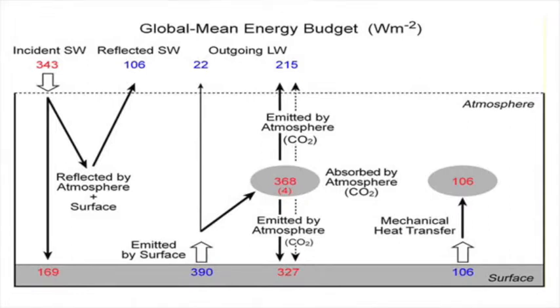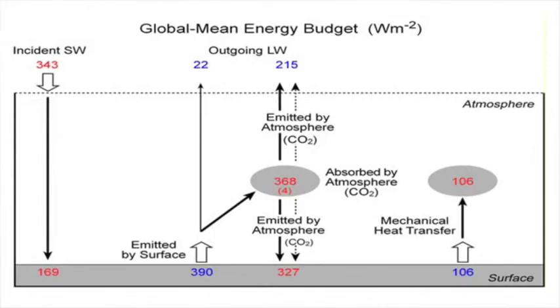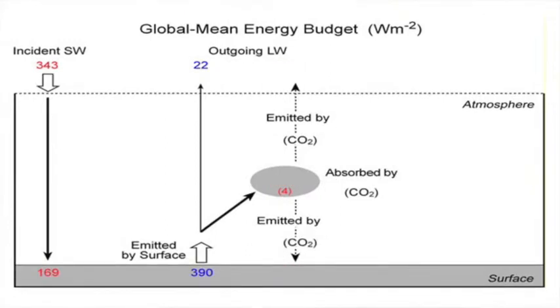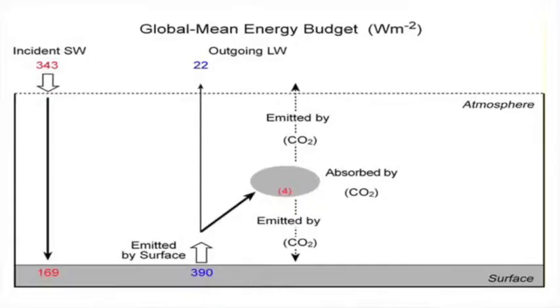Reflected shortwave energy, which depends on cloud and ice, can't change independently. Mechanical heat transfer from the Earth's surface, which depends on ocean circulation, can't change independently. And 99% of the longwave energy absorbed by the atmosphere and re-emitted back downward to warm the Earth's surface, which depends on water vapor and cloud, can't change independently. In the model world — the part consistent between all two dozen models — changes in the global energy budget reduce to a highly simplified balance driven exclusively by CO₂. This means that 1% of the global energy budget wags the other 99%.